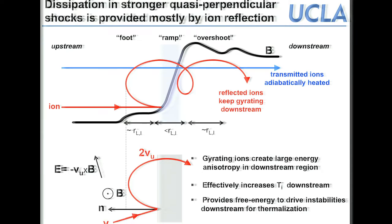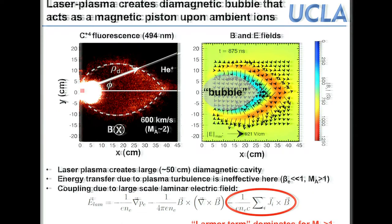When shocks get strong enough — say Mach 2 or higher — the potential gets so large that some incoming ions get reflected. In the plasma rest frame they change momentum by a factor of two, speed up, return to the upstream region, gyrate once, then come back with enough energy to cross the shock. On the downstream side they gyrate, which effectively increases the ion temperature and provides free energy to drive instabilities and turbulence to thermalize the plasma.